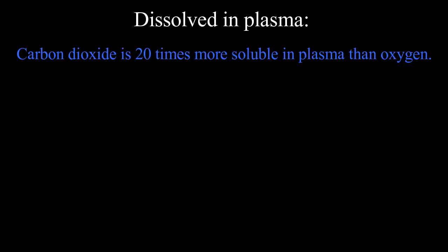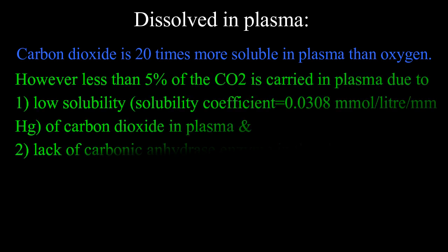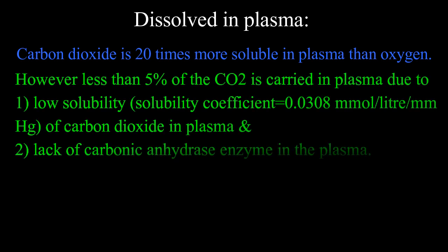First, dissolved in plasma. Carbon dioxide is 20 times more soluble in plasma than oxygen. However, only 5% of carbon dioxide is carried in the plasma due to the low solubility of carbon dioxide in plasma. This solubility coefficient is just 0.03 millimoles per liter per mmHg, and the lack of carbonic anhydrase activity in the plasma.